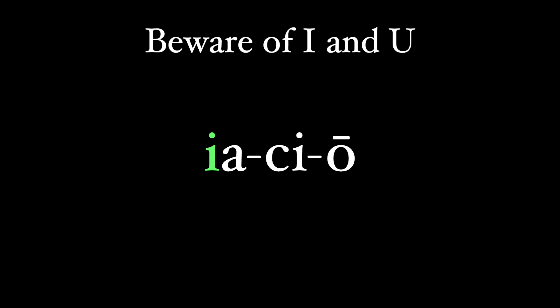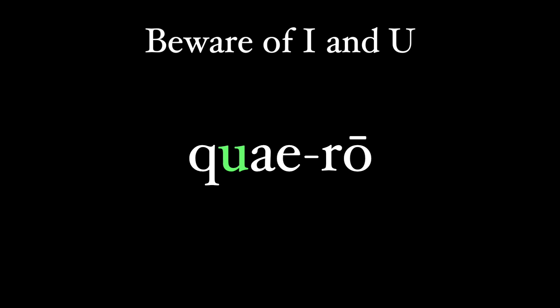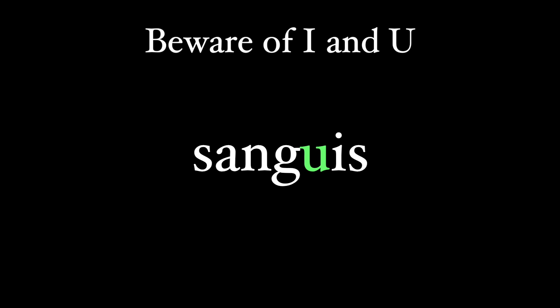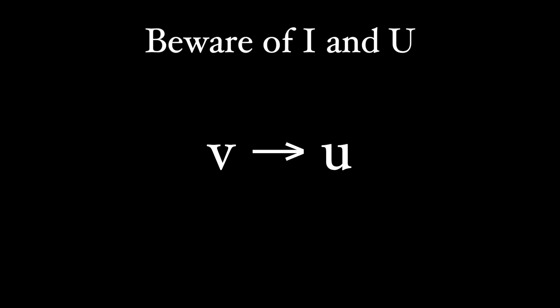Beware of Latin's peculiar letters: an 'i' followed by a vowel at the beginning of a word is a consonant. 'Iacio' has three syllables, not four, since the first 'i' is a consonant - it turns into a 'j' in many modern languages including English; 'eject' derives from this word. Also, 'u' when followed by a 'q' is part of the consonant group: 'quiro' has just two syllables. This sometimes holds for 'u' following an 's' or a 'g' - 'suavis' customarily has two syllables, not three, and 'sanguis' also has two syllables, not three. Some texts replace all 'v's with 'u's, making Caesar's famous quote look quite strange.